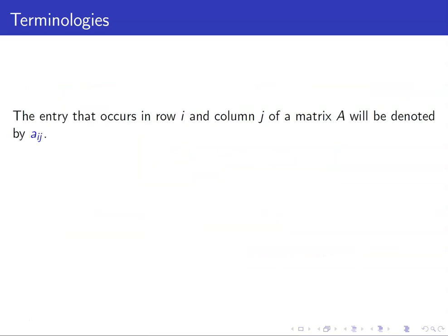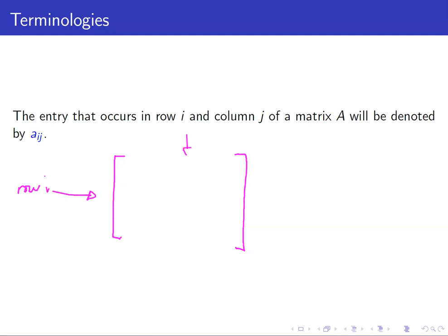Now what we want to do next is to identify the entry that occurs in a certain row and a certain column. We denote the entry that occurs in row i and column j of a matrix by a_ij. What this is saying is that if I have here a matrix and this is row i and column j, then that entry — the entry in row i and column j — is what we call our a_ij. Here, 'a' is just notation — it can be c_ij, it can be anything, as long as you have the subscripts i and j.